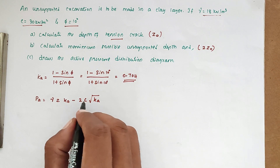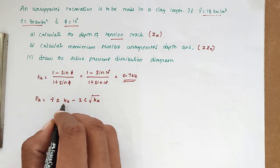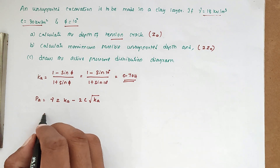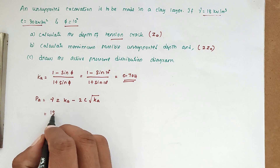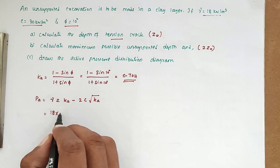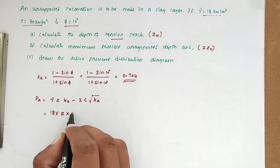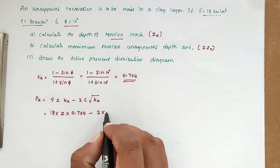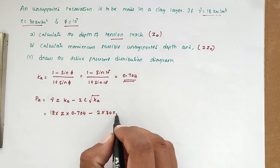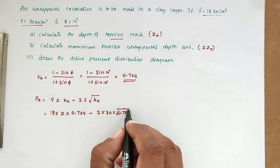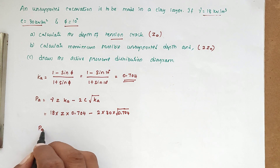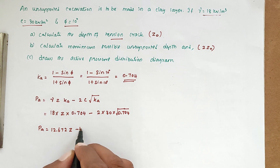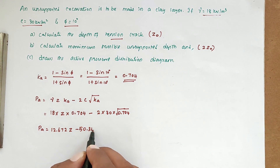Substituting all the values: gamma is 18, Ka is 0.704, and c is 30. So Pa = 18 × z × 0.704 − 2 × 30 × √0.704. Solving this, we get the equation Pa = 12.672z − 50.343.